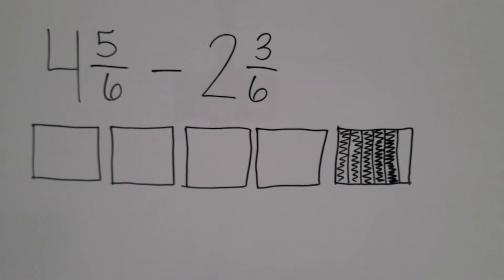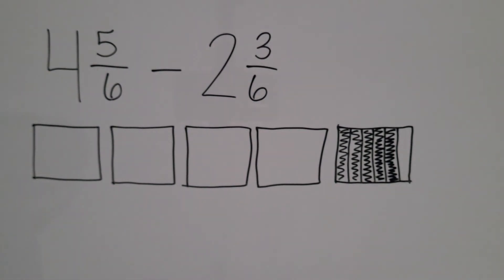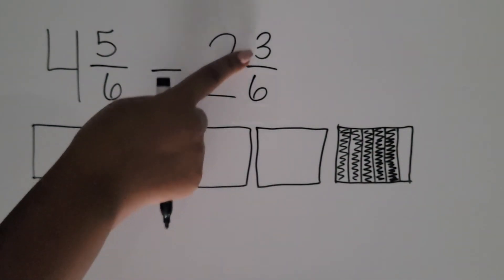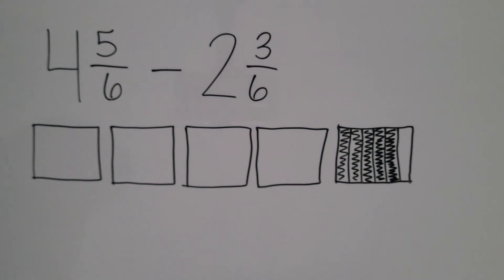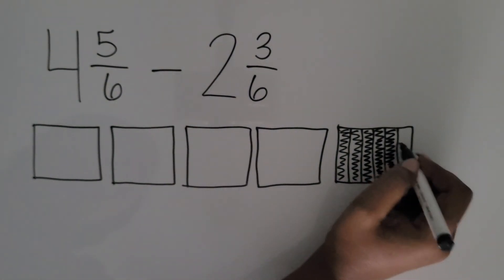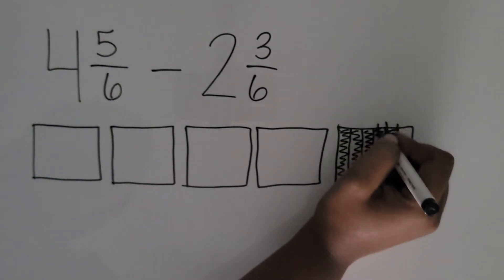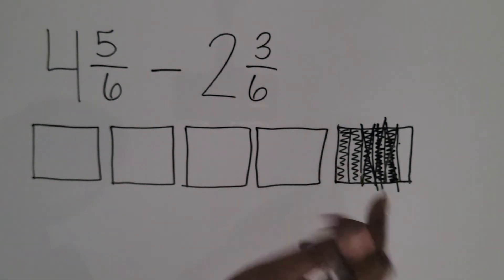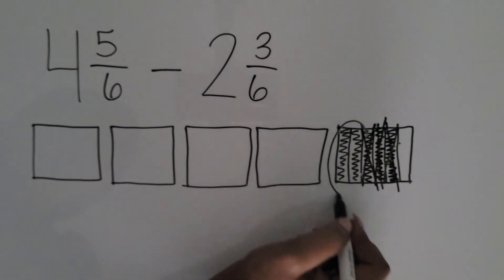We allow students to work through this, but if they need guidance, ask: what amount are we taking away? They'll say two wholes and three-sixths. Ask what they can subtract first — do they have sixths to subtract from? Yes, five-sixths. How many do we subtract? Three-sixths. Show me what it looks like to subtract three-sixths. Hopefully they cross out one-sixth, two-sixths, three-sixths. How many sixths remain? Two-sixths remaining — circle those.